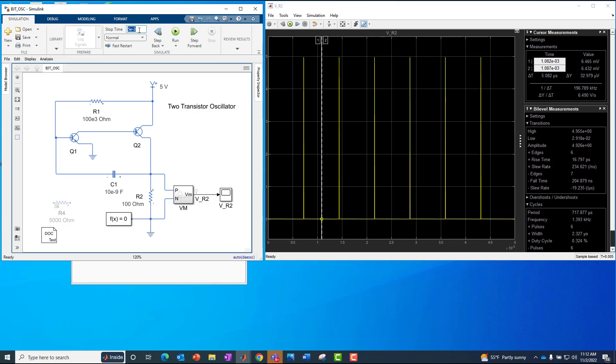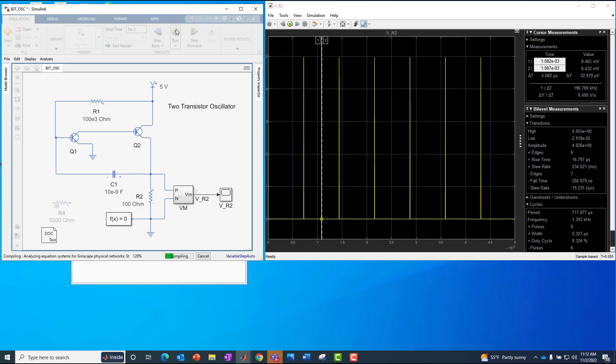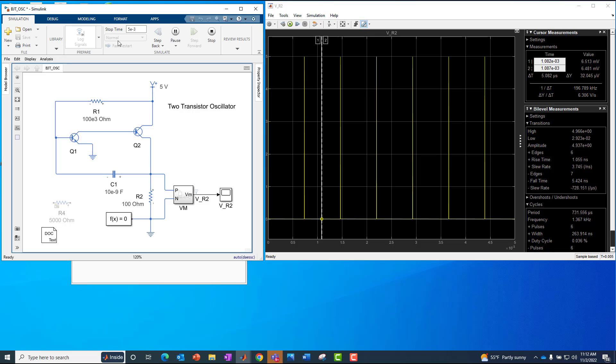All right. So I'm going to run this circuit for five milliseconds. Again, this is our Simulink environment or model, but it's built predominantly using these Simscape electrical components. So I am going to hit play, run for five milliseconds. And then we see these pulses every so often.